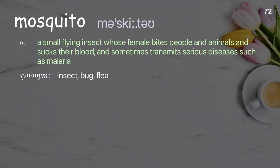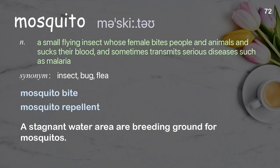Mosquito: a small flying insect whose female bites people and animals and sucks their blood, and sometimes transmits serious diseases such as malaria. Examples: mosquito bite, mosquito repellent. Stagnant water areas are breeding grounds for mosquitoes.